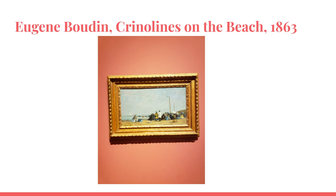Crinolines on the Beach depicts the activities of the upper class in the 19th century and shows the changing fashion at that time and the lifestyle of upper class society. Boudin captures the effects of light and atmosphere in his painting, highlighting the importance of nature and its beauty. Eugene Boudin's Crinolines on the Beach is a culturally significant work which better understands our view of nature and upper class society in the 19th century, with his use of line, color, and light. Boudin's work continues to inspire many artists today, making it an essential piece of art history.